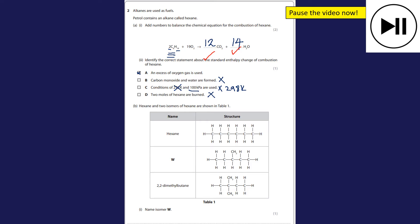And B, hexane and two isomers of hexane are shown. So we've got hexane here and then we've got the two isomers. It wants me to name isomer W. Right, so the longest chain is one, two, three, four, five, so it's pentane. But there's a methyl here, there's a methyl group, and it's on the one, two, three, one, two, three, so it doesn't matter which direction I count from. So it's 3-methylpentane.